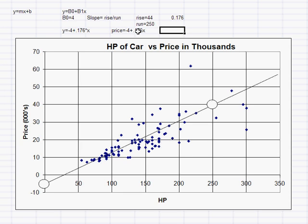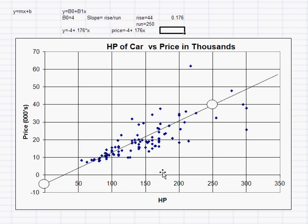The slope we also want to interpret: for each one additional unit of x — each additional horsepower — how much does y go up? The answer is 0.176 thousand dollars. You have to keep the units in mind. So we interpret the slope 0.176 as: for each additional horsepower, we would expect the price of a car on average to go up by about $176, because that's 0.176 thousand dollars.